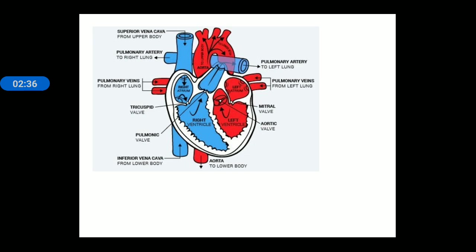Deoxygenated blood is carried by different organs towards the heart, and oxygenated blood is carried by the lungs towards the heart. You can see the superior vena cava and inferior vena cava on the right side of the heart. Heart has four chambers — right and left — further divided into right atrium, left atrium, right ventricle, and left ventricle.